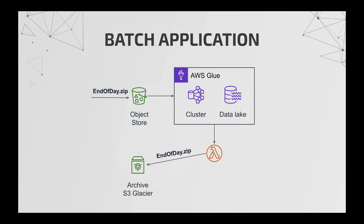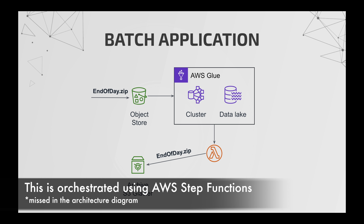I'm going to leverage Lambda for archival. Once the EMR cluster finishes its job — reading the file, processing it, and storing it in the data lake — I'm going to send an event to trigger a Lambda function. The Lambda function will take the file in S3 and mark it as Glacier so that it can be archived. We can retrieve it from Glacier whenever needed, and by moving it from S3 into Glacier we save on storage cost. The AWS Glue offering is completely serverless: based on the file arrival a cluster is created, and once the job is done the Lambda archives the file.